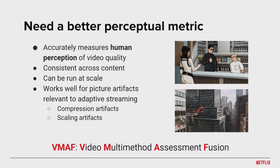We found that automated metrics also fell short in terms of capturing the perceptual quality of our end viewers. So what we need is a better perceptual metric that could accurately measure the human perception of video quality. It needs to be consistent across different content, whether animation or an action movie. And because we want it to run at scale in our cloud infrastructure, it needs to be reasonably computationally efficient. Most importantly, because we're operating with HTTP adaptive streaming, the two most important types of artifacts this metric should capture are compression artifacts as well as scaling artifacts. Our answer is VMAF — Video Multi-Method Assessment Fusion — a video quality metric that combines machine learning with human vision system modeling.